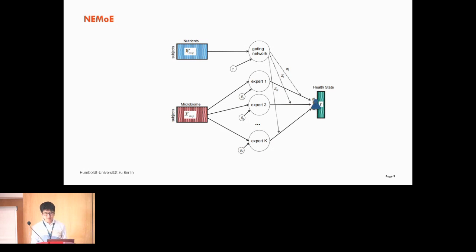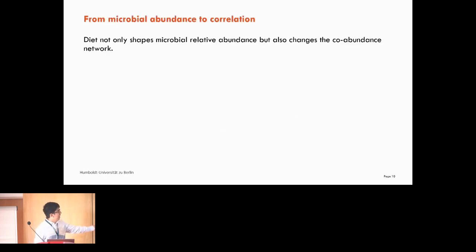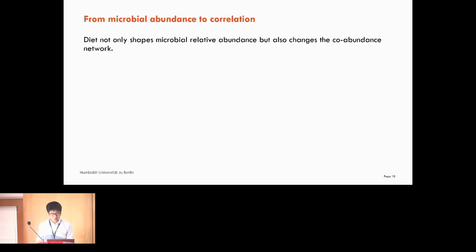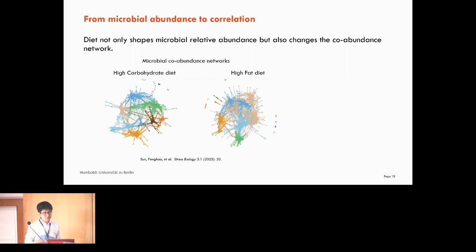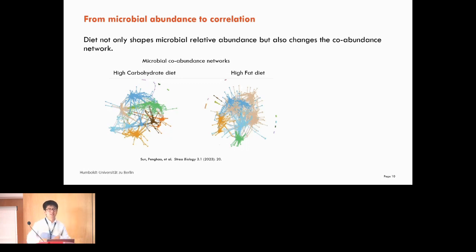Diet not only shifts microbial relative abundance but also changes the co-abundance network. A paper shows that high carb diet and high fiber diet have very different microbial networks. The key question we are trying to answer is: for cohort studies, can we discover under what diet condition the gut microbiome co-abundance network is different? Different diet intake will change the relationships between microbiome members — for example, microbes that co-occur together in one dietary state may show changed correlation in another.